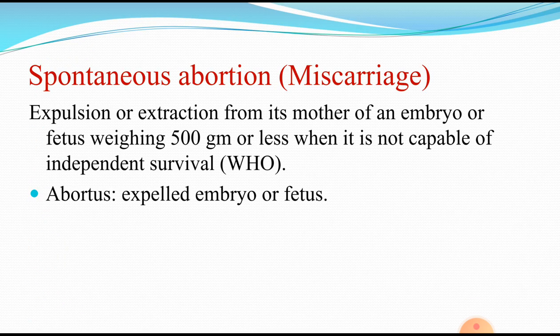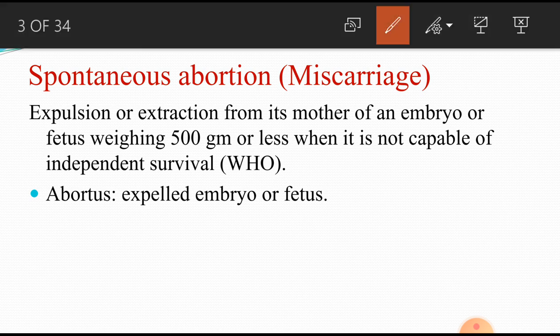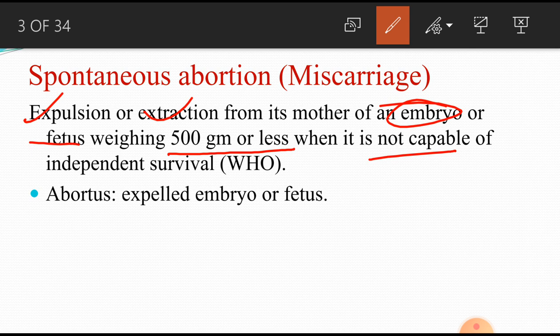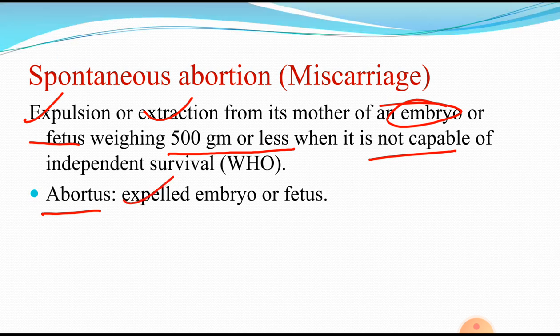First, definition of spontaneous abortion or miscarriage: expulsion or extraction from its mother of an embryo or fetus weighing 500 grams or less when it is not capable of independent survival. So when a fetus or embryo is 500 grams or less and it is not capable of independent survival, it is expulsion or extraction — that is called spontaneous abortion. The expelled embryo and fetus are called abortus.